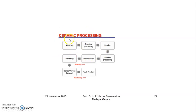In ceramic processing, minerals are first taken as raw material, then applied to the chemical processing stage. During the chemical processing, they undergo further transformation.